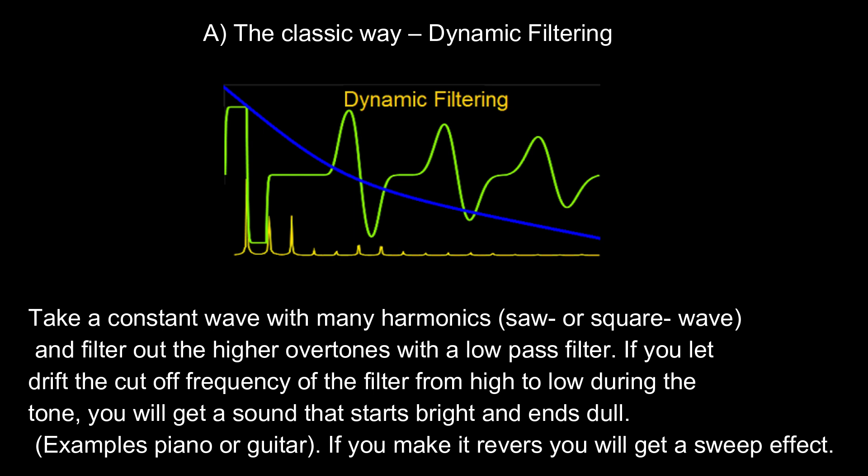A. The classic way. Dynamic filtering. Take a constant wave with many harmonics, saw or square wave, and filter out the higher overtones with a low-pass filter. If you let drift the cutoff frequency of the filter from high to low during the tone, you will get a sound that starts bright and ends dull. Examples: piano or guitar. If you make it reverse, you will get a sweep effect.